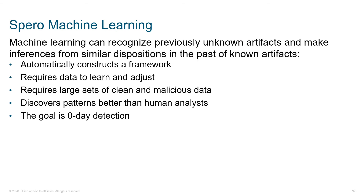Sparrow is the machine learning engine that can recognize previously unknown artifacts — not leveraging signatures, but looking at the way the application behaves. This requires large data sets that are both clean and malicious. We feed it good files and malicious files. The hope is that when we come across something brand new, Sparrow has seen enough good and bad files to recognize that this type of behavior is typical of malware.